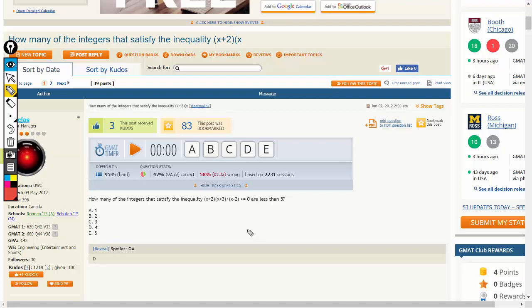The correct approach for solving these questions is to imagine a number line and then equate each term to zero. This term would become zero when x equals negative 2, this would be zero when x equals negative 3, and this would be zero when x equals positive 2.